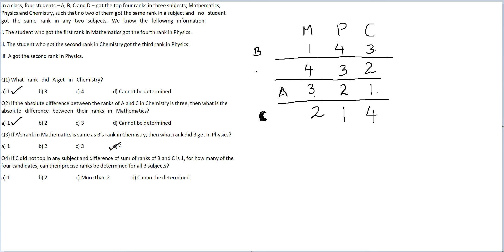Now, the last question. If C did not top in any subject. If C did not top in any subject. This has to be removed. This was only valid for question number three. If C did not top in any subject. C cannot come here. C cannot come here. C will necessarily come here.